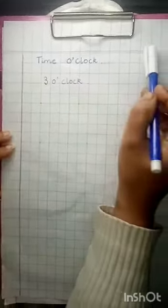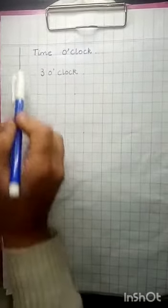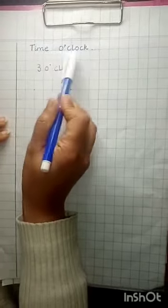Write down date here, day here. So draw a margin line, leave one block, and write down the headline: Time o'clock.